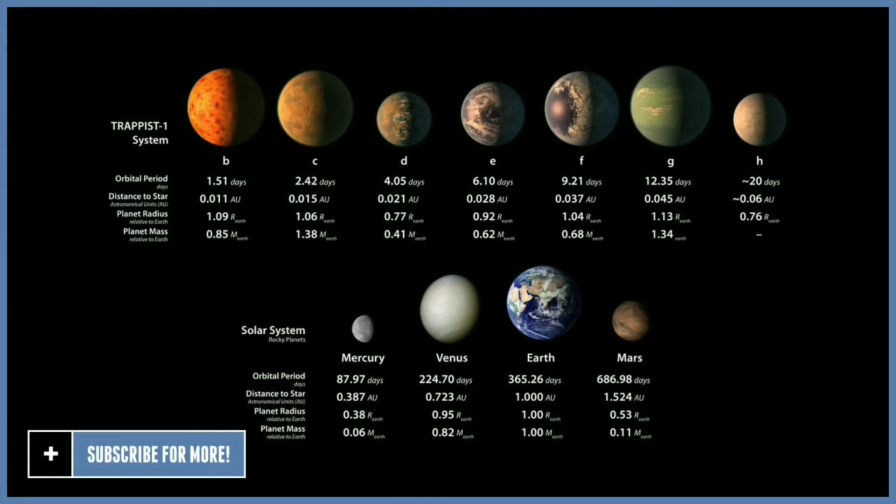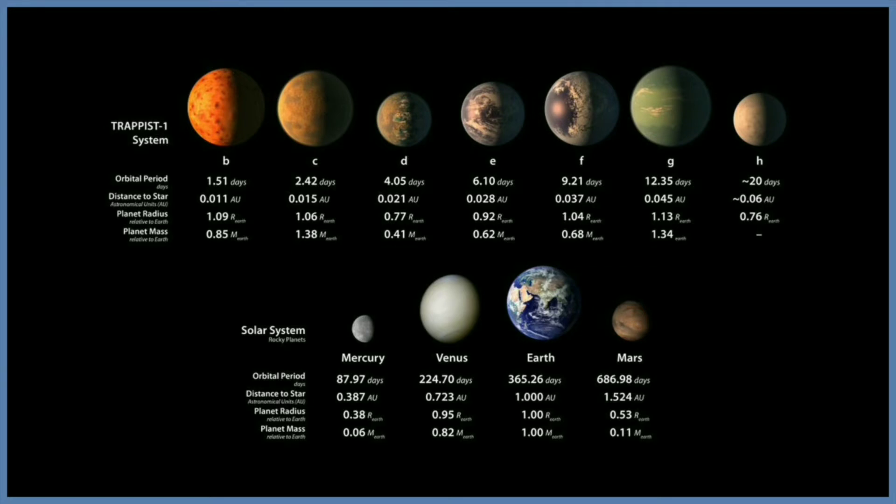Using the data from the Spitzer Space Telescope, the team measured the size of all seven planets and developed the first estimates of the masses of just six of them. Based on these density results, these TRAPPIST-1 planets are likely to be all rocky.